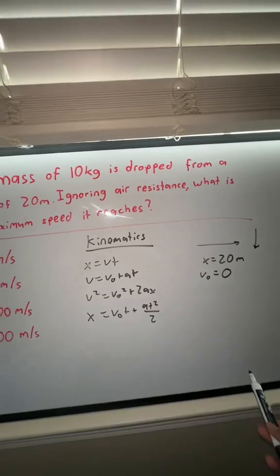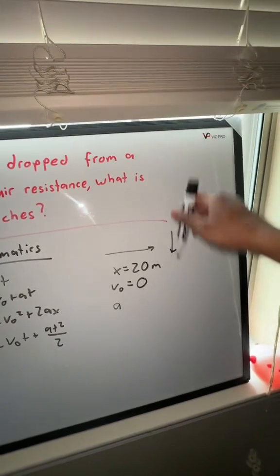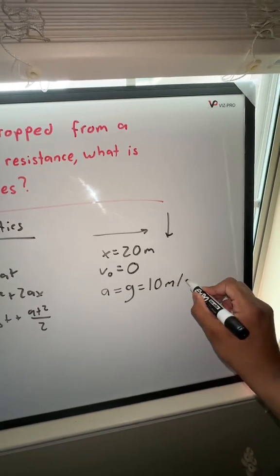We're given x and v₀. Another thing that might not be quite apparent is that we're also given acceleration, because we're just dropping it. So acceleration is just going to be gravitational acceleration, which is 10 meters per second squared.